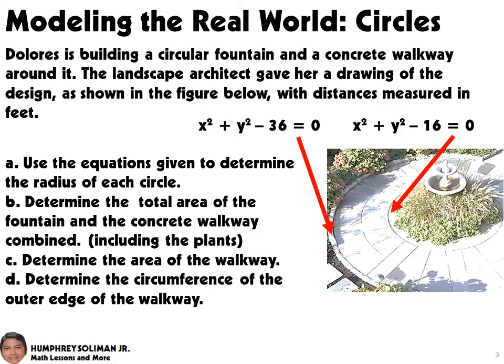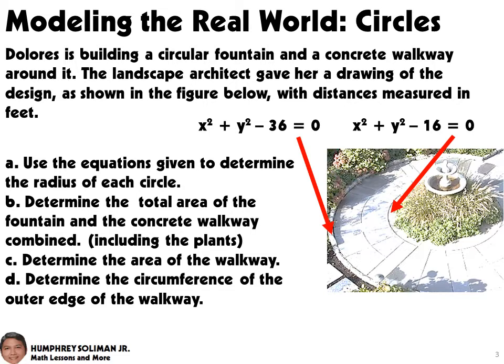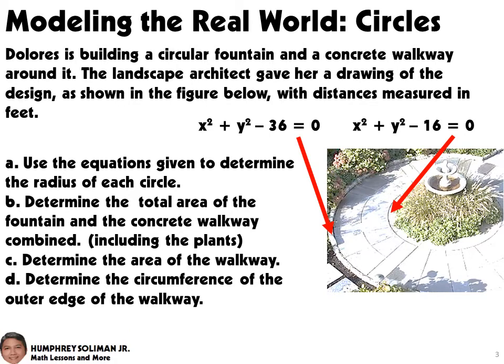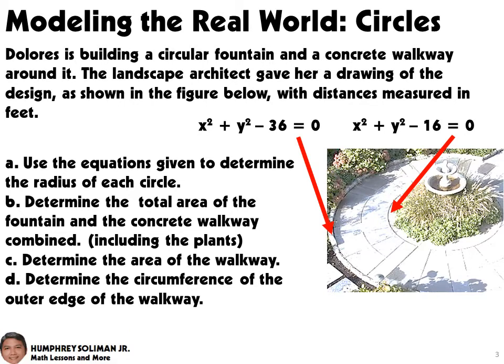Letter A: Use the equations given to determine the radius of each circle. Letter B: Determine the total area of the fountain and the concrete walkway combined, including the plants. Letter C: Determine the area of the walkway. Letter D: Determine the circumference of the outer edge of the walkway.